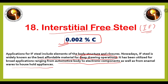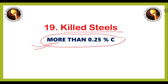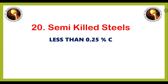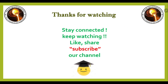The next type of steel is killed steel, which has more than 0.25 percent carbon. This is based on the deoxidation process. Next is semi-killed steel, which has a carbon percentage of less than 0.25 percent. There is also rimmed steel, which also has a carbon percentage of less than 0.25 percent.